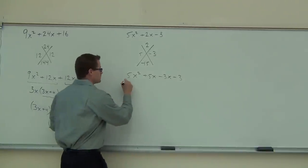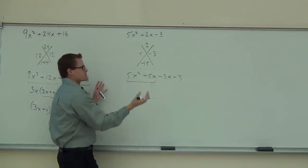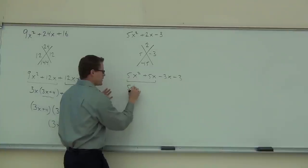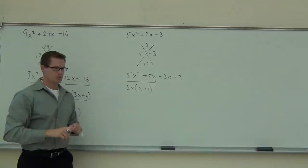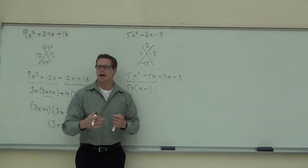So factoring by grouping, out of these first two terms, I'm seeing a 5X. So we're going to factor out 5X and get X plus 1. You still with me? Okay. The other two terms. Here's what happens.